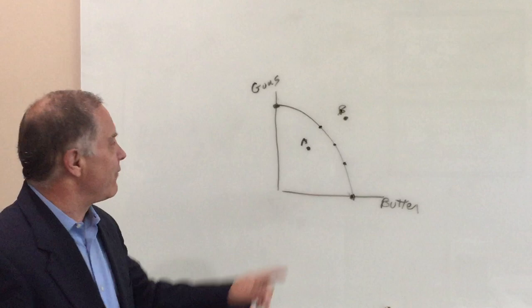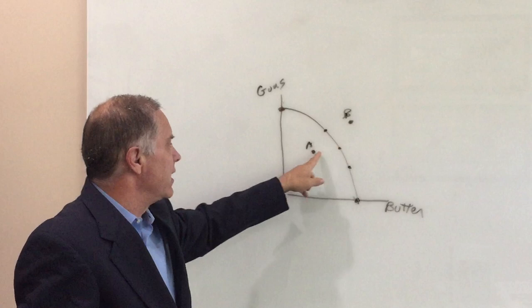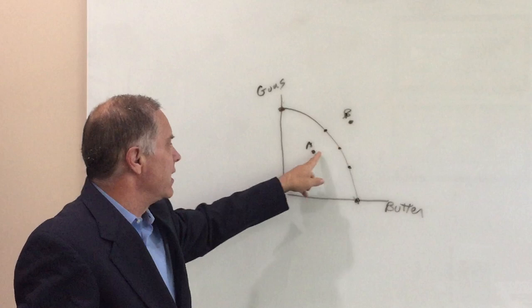What about point B? How do you get out there? You don't. That's the definition. Production possibilities end there. That's all you can make. Impossible, inefficient.